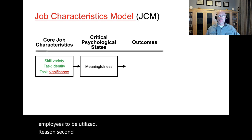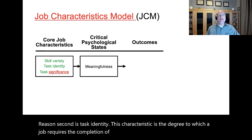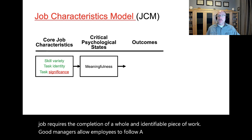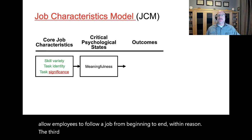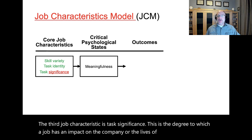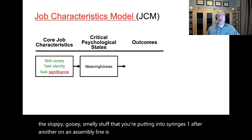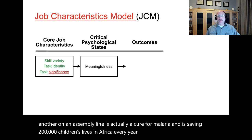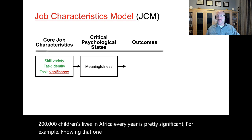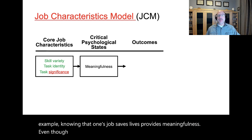Second is task identity. This characteristic is the degree to which a job requires the completion of a whole and identifiable piece of work. Good managers allow employees to follow a job from beginning to end, within reason. The third job characteristic is task significance. This is the degree to which a job has an impact on the company or the lives of others. Knowing that the sloppy, gooey, smelly stuff that you're putting into syringes one after another on an assembly line is actually a cure for malaria and is saving 200,000 children's lives in Africa every year is pretty significant. For example, knowing that one's job saves lives provides meaningfulness, even though the job itself might be incredibly boring.